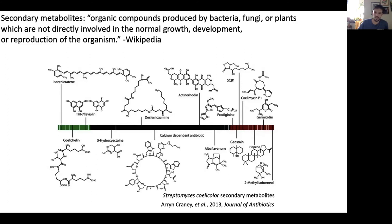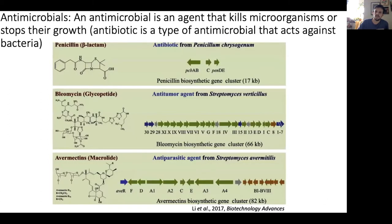I'll talk about siderophores a little more later on. One important class of secondary metabolites are antimicrobials — compounds secreted by microbes that target other organisms. Some examples include penicillin, which I think was the first discovered antibiotic from Penicillium chrysogenum, and it targets the bacterial cell wall. There's also bleomycin, a larger molecule that induces breaks in DNA strands.